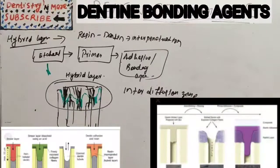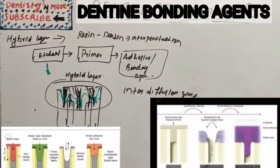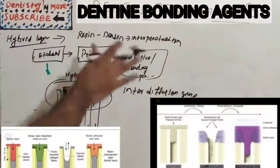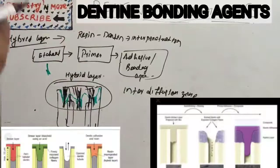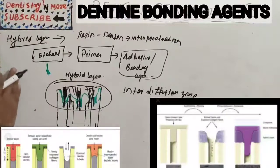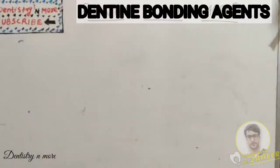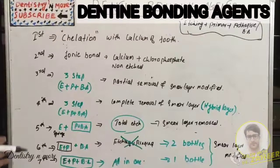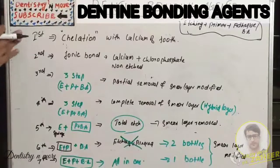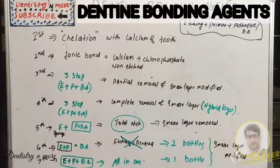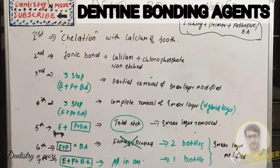Next we'll see the generations of dentin bonding agent. We need to understand the process first: etchant, primer, and adhesive, the differences between dentin and enamel, total etching vs selective etching, smear layer and its role and management, and the hybrid layer. We have generation one to generation seven. Academically, we need to learn all seven generations. Currently, dentists use the fifth, sixth, or seventh generation - the first four are outdated, but we need to understand all seven to appreciate how much the bonding system has improved.